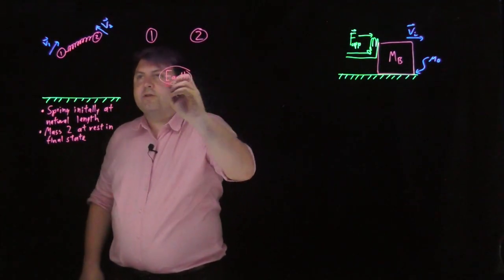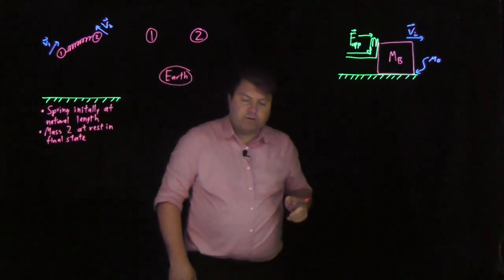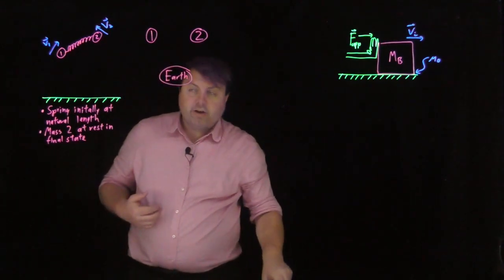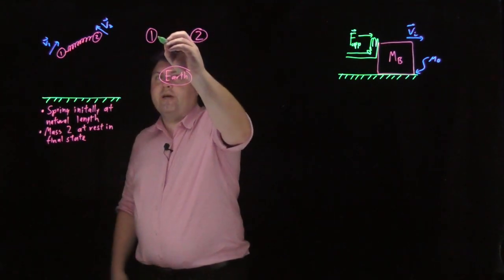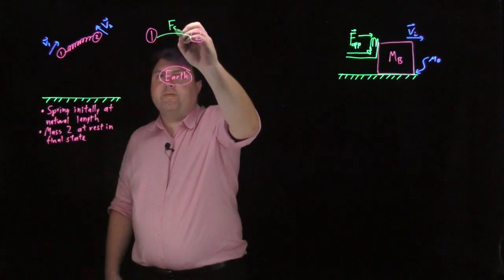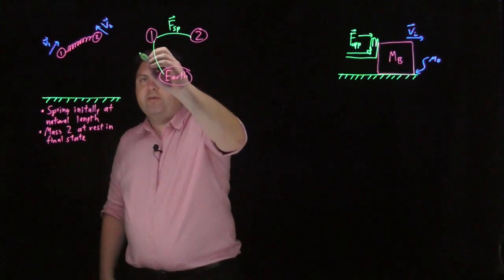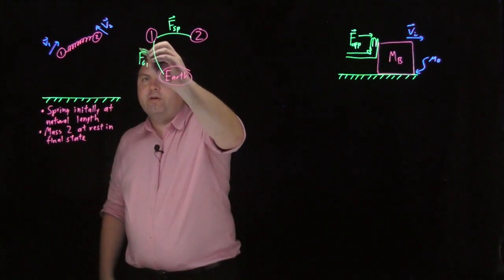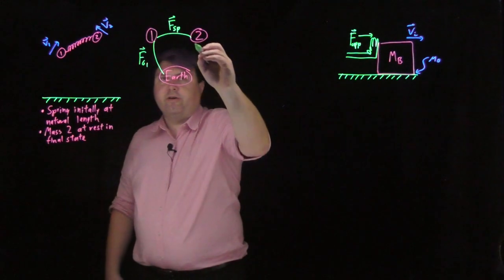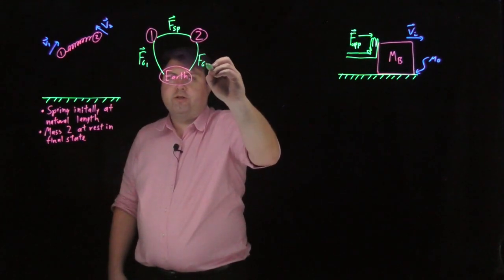We can feel pretty good that there's nothing else in contact with one or two except with each other. So, they're interacting through a spring, so we can put F spring here. One and the Earth are interacting with gravity, so we can do FG1. And two and the Earth are interacting through gravity, so we can do FG2.